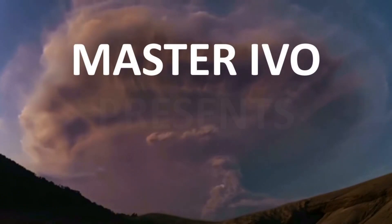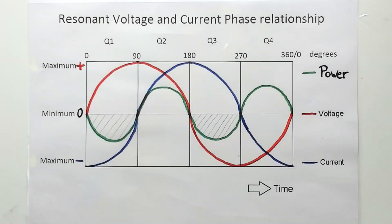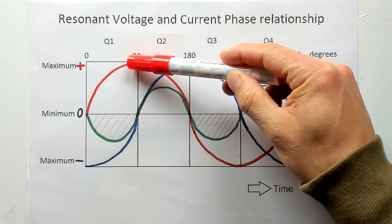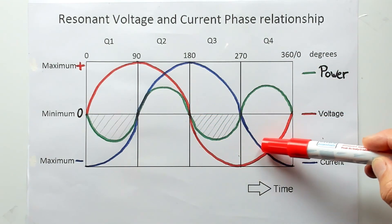Let's take a look. I have here the resonant sine wave of a coil. In red the voltage zero to maximum to minimum to maximum negative and zero again.